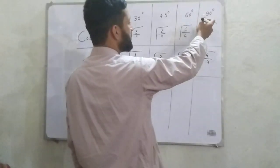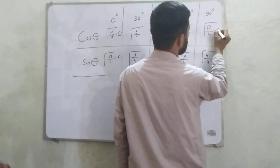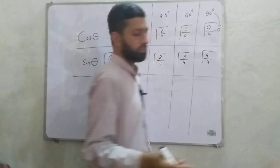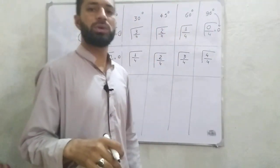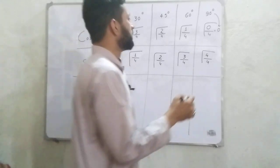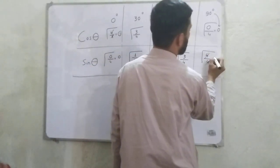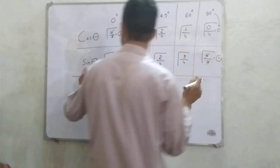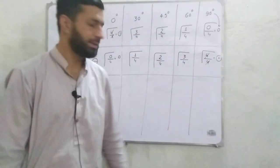For cos 90: 0 divided by 4 is equal to 0, and the square root of 0 is 0, so cos 90 is equal to 0. For sin 90: 4 divided by 4 is equal to 1, and the square root of 1 is equal to 1, so sin 90 is equal to 1.